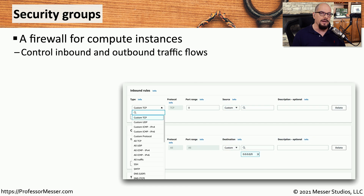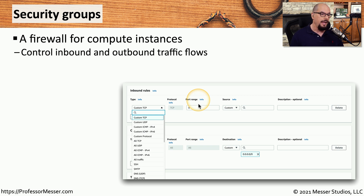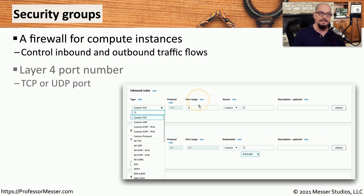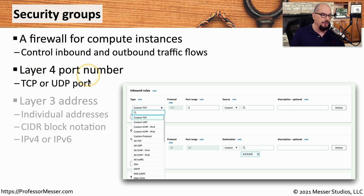One common way to manage access to these Compute Engines is from network connectivity using security groups. It's common to have a firewall just outside of the Compute Engine, where you can control what traffic is inbound and outbound from that instance. Since this is a firewall, we can control access based on a TCP or UDP port number, working at OSI Layer 4.